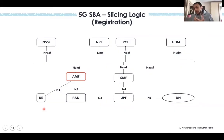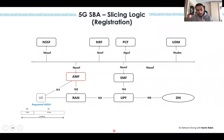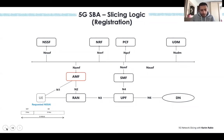During registration — similar to the attach in 4G — the UE sends what we call a requested NSSAI. NSSAI stands for Network Slice Selection Assistance Information. From the name, it's what assists the network to assign the right slice for the UE. The term 'requested' means it's coming from the UE. So the UE sends a request saying it wants to be in a certain slice, indicated in the NSSAI structure.